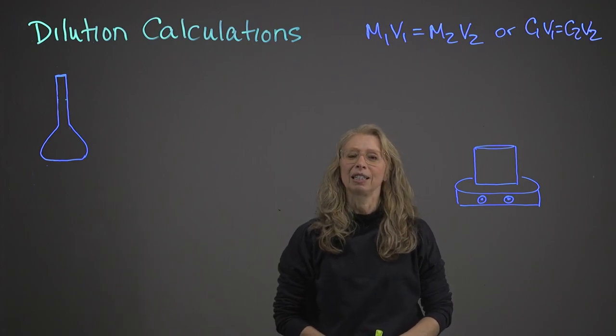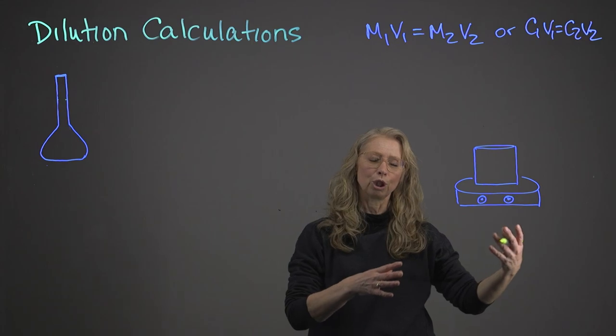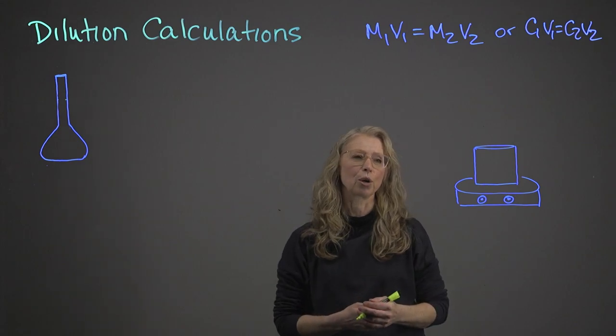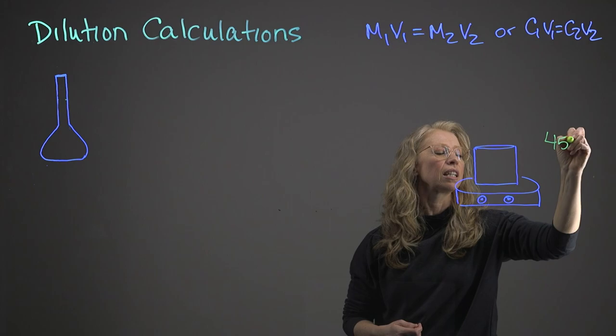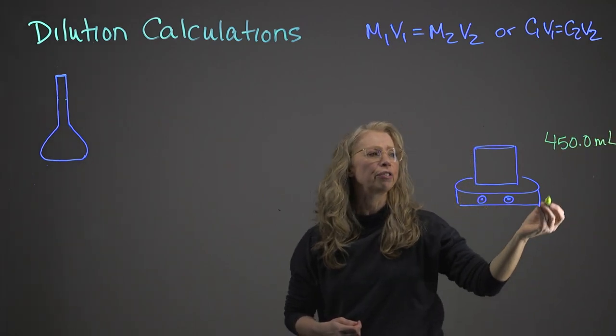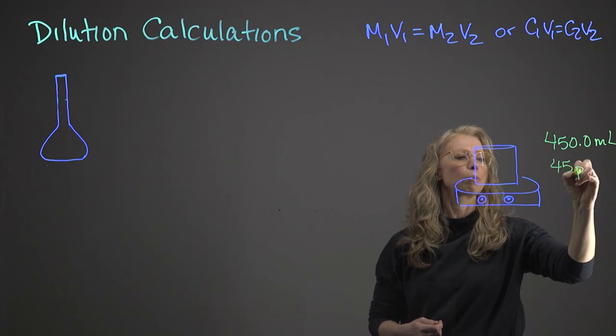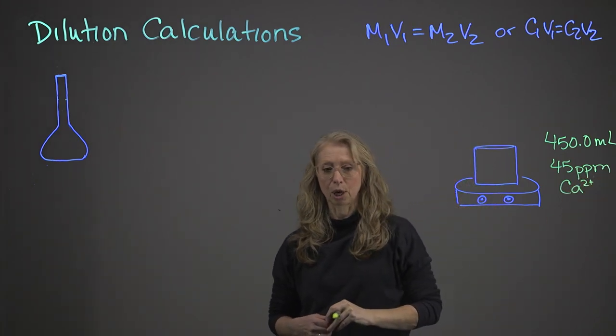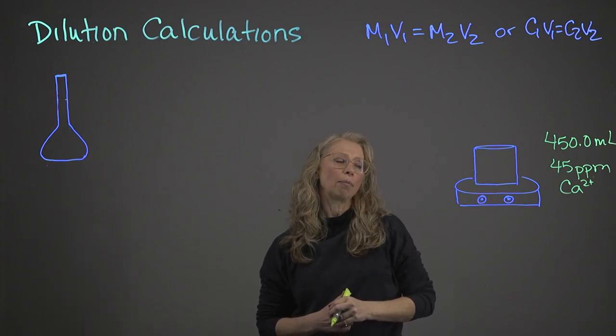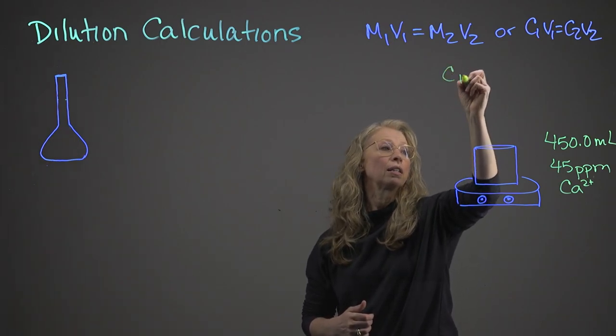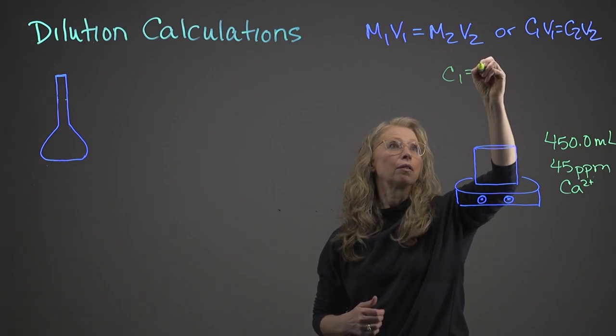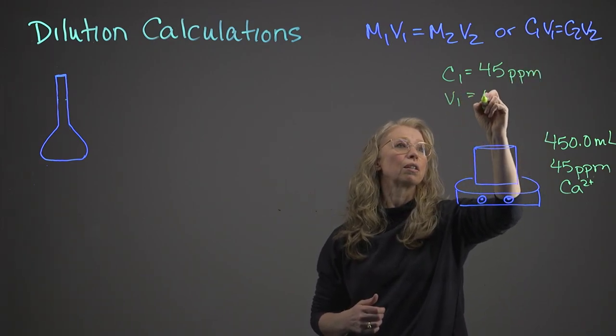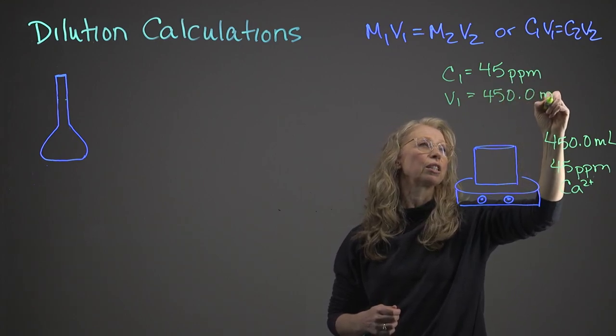Now for a different example. This is called a dilution calculation, but really it's about changing the concentration and determining either the volume, the new volume, or the new concentration. So let's say I had 450 milliliters of a calcium solution that contained 45 parts per million of calcium solution. So now I've got my concentration, C1 equals 45 parts per million, and I have a V1 which is 450.0 milliliters.